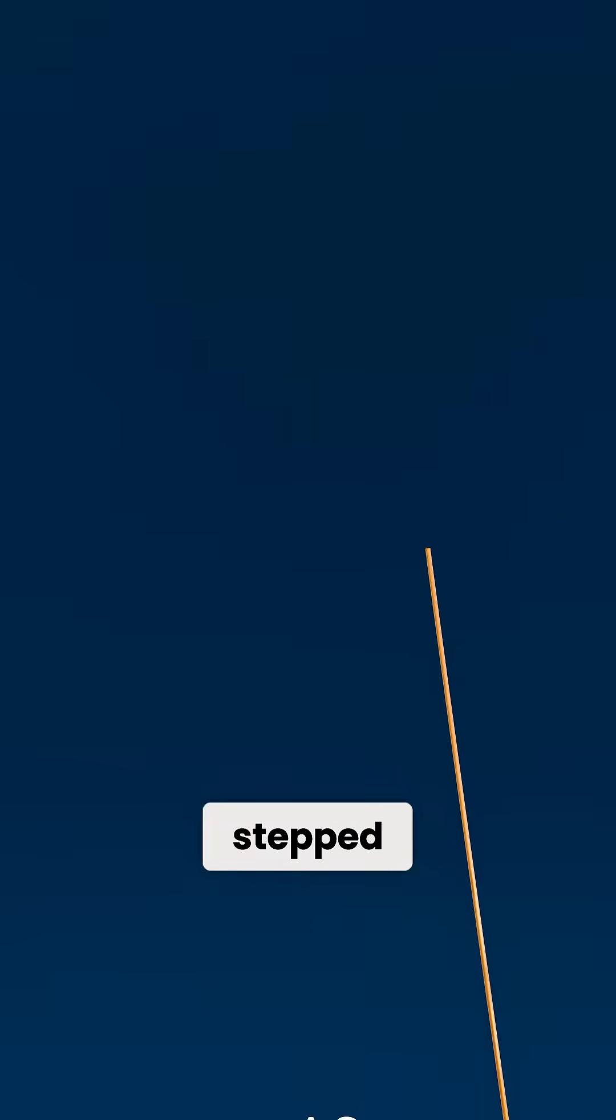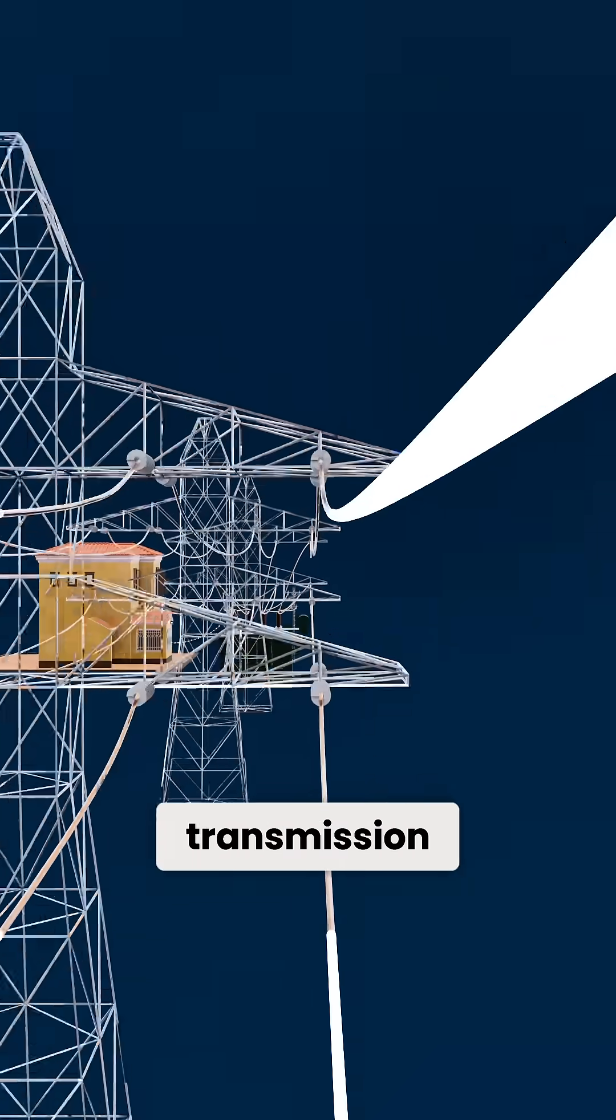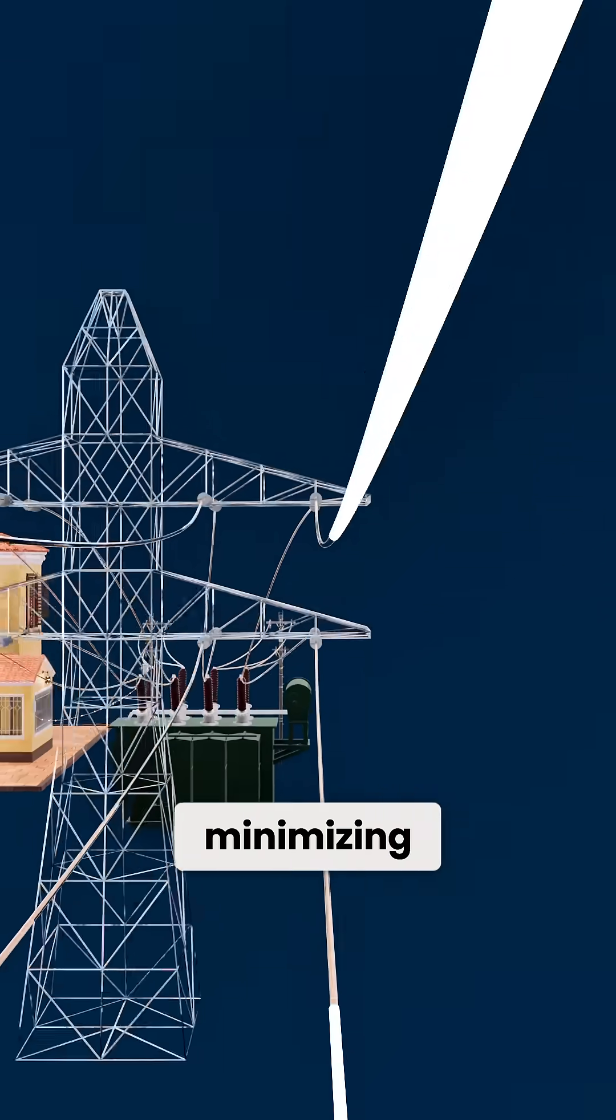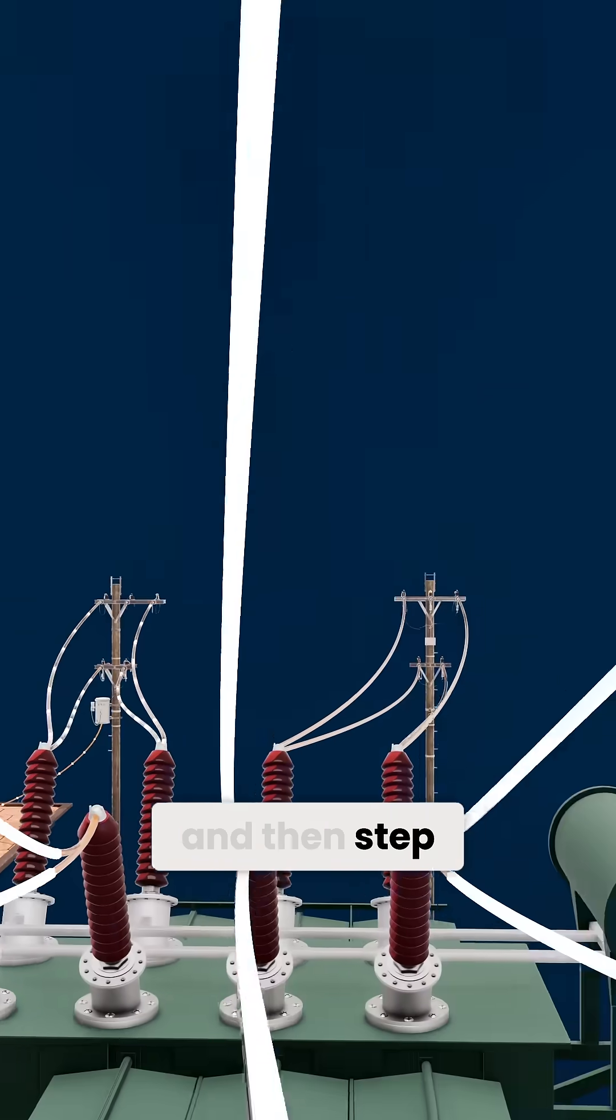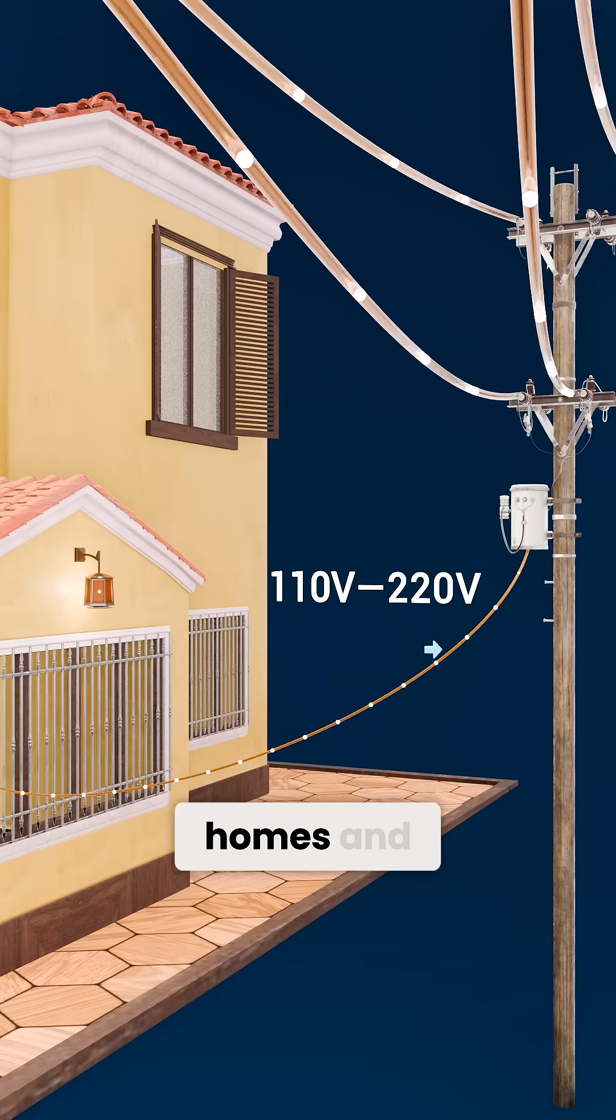AC could be stepped up to extremely high voltages for long-distance transmission, reducing current and minimizing losses, and then stepped back down again to safe levels for homes and businesses.